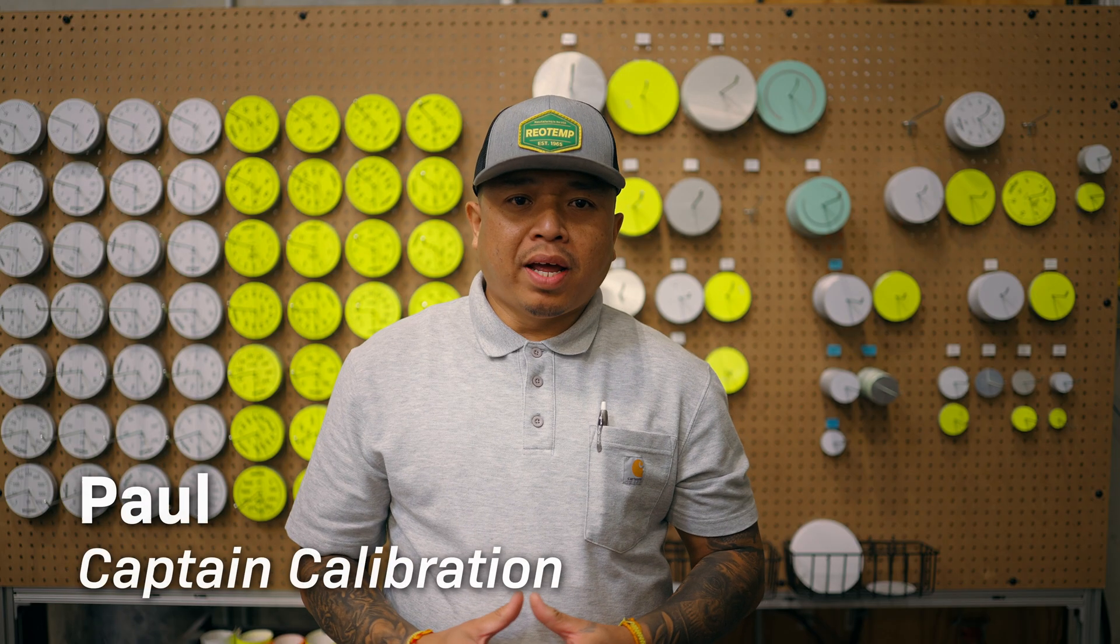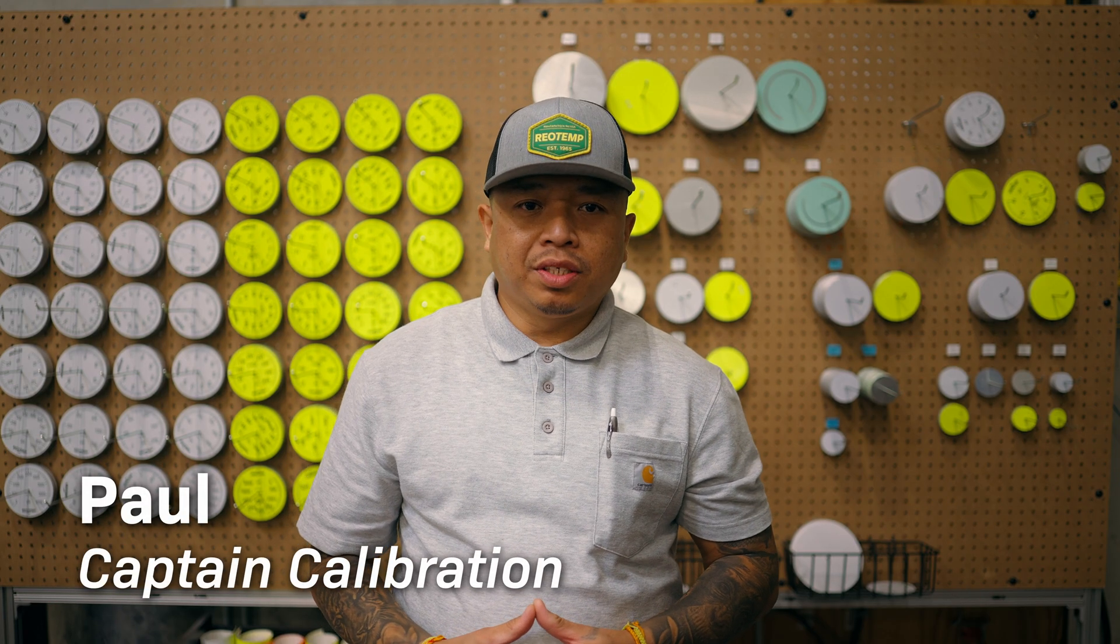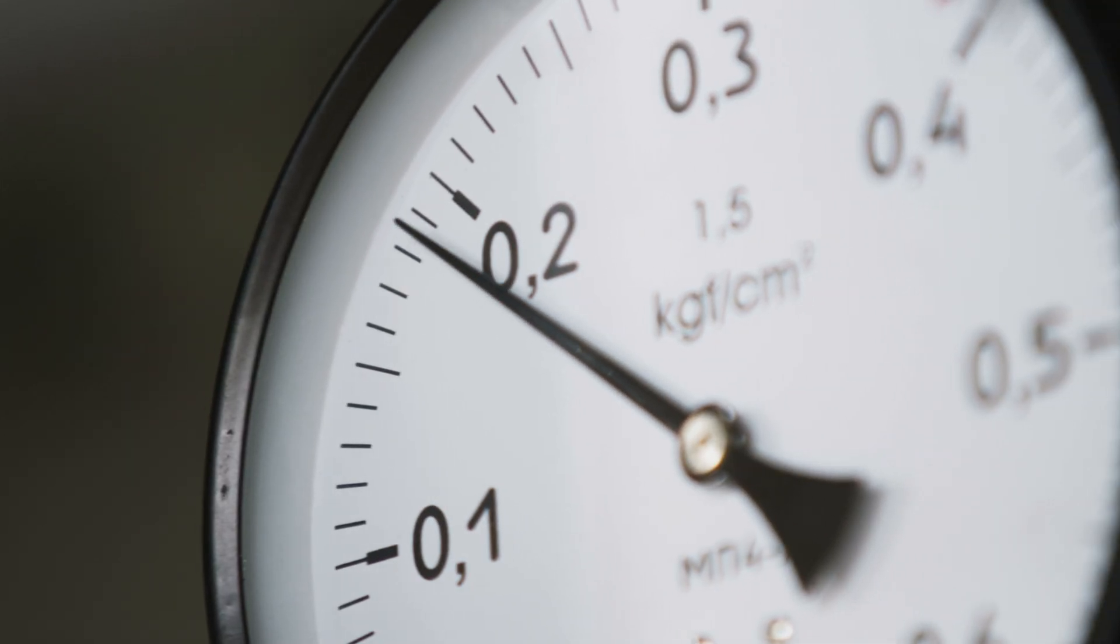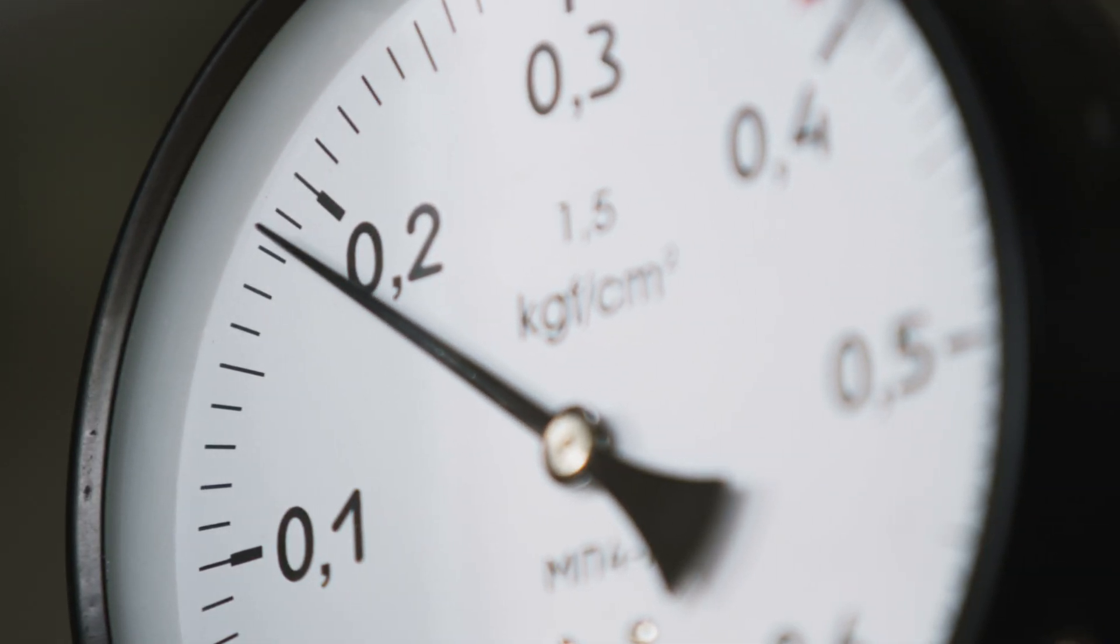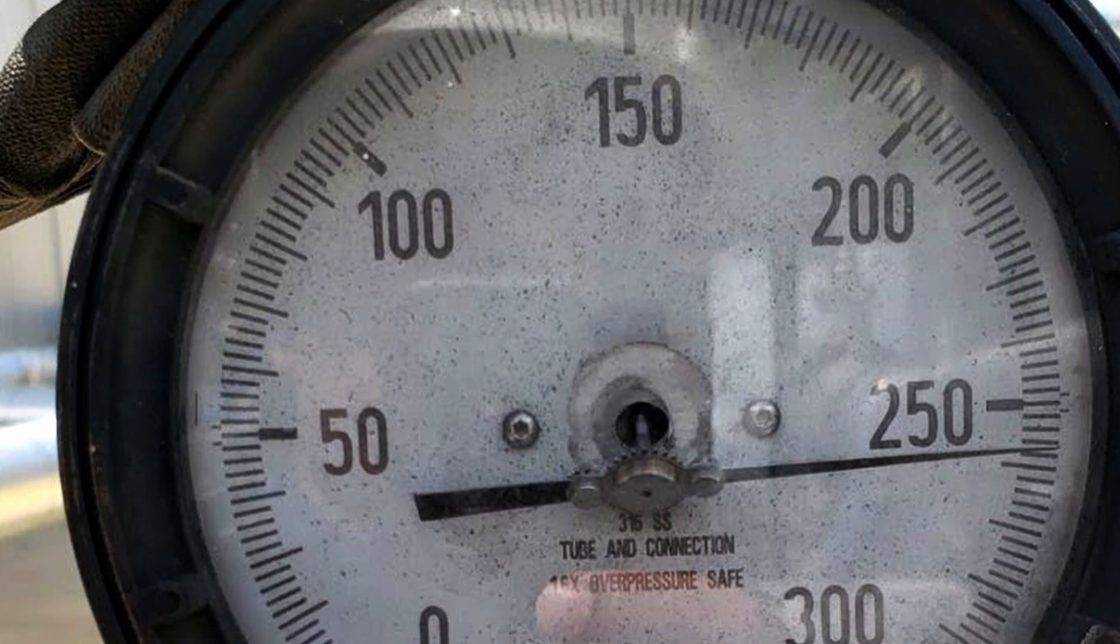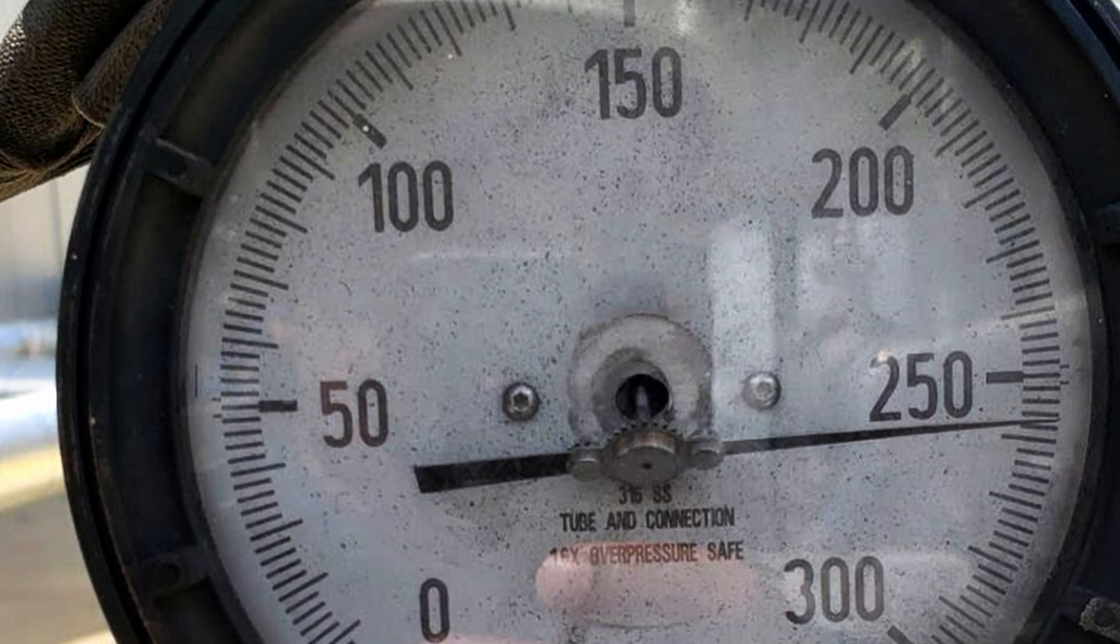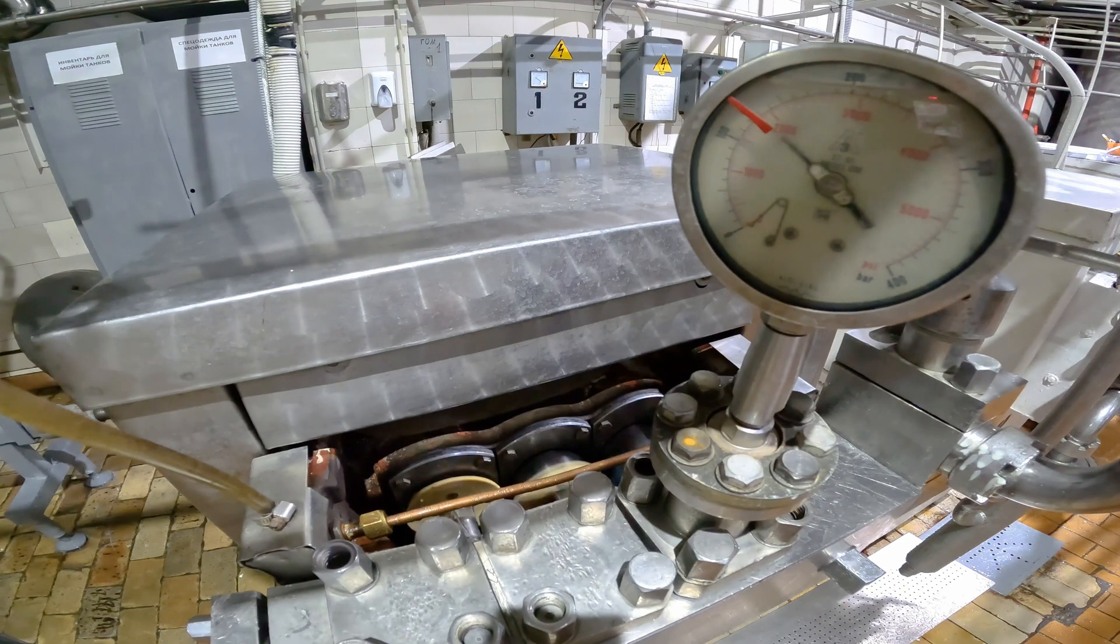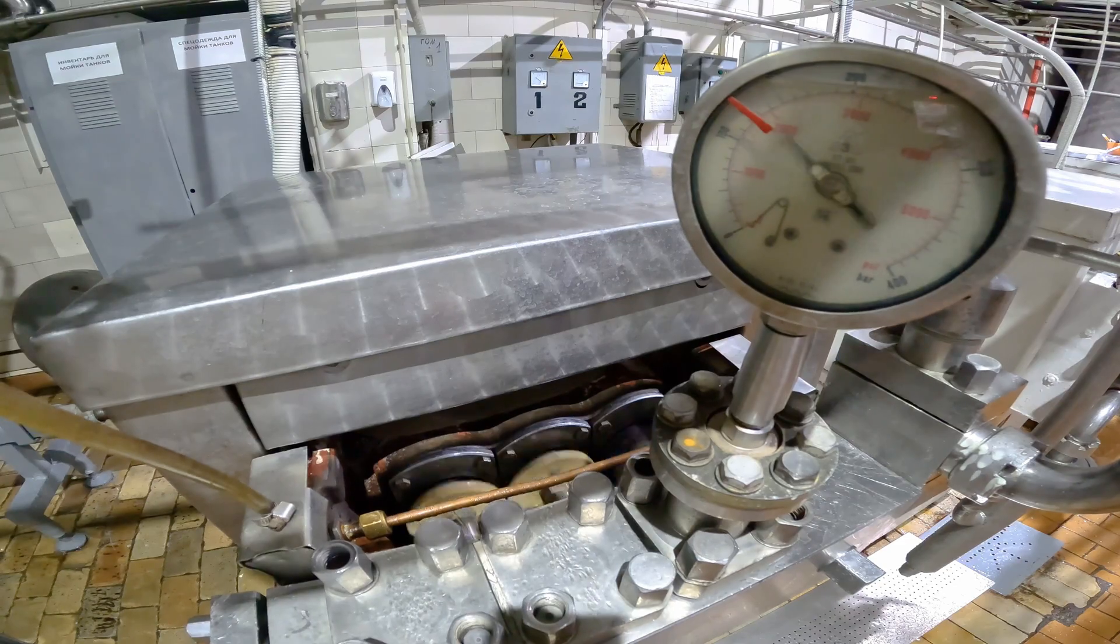The presence of black powder inside the pressure gauge case is typically a sign of vibration and pulsation stress on the gauge. The black powder is actually fine metallic shavings from the internal components of the pressure gauge, such as the sector gear, pinion, and pointer shaft grinding against each other at high frequency.